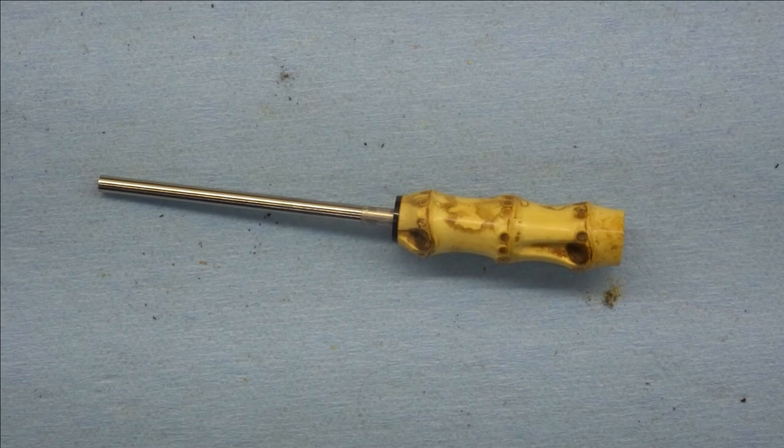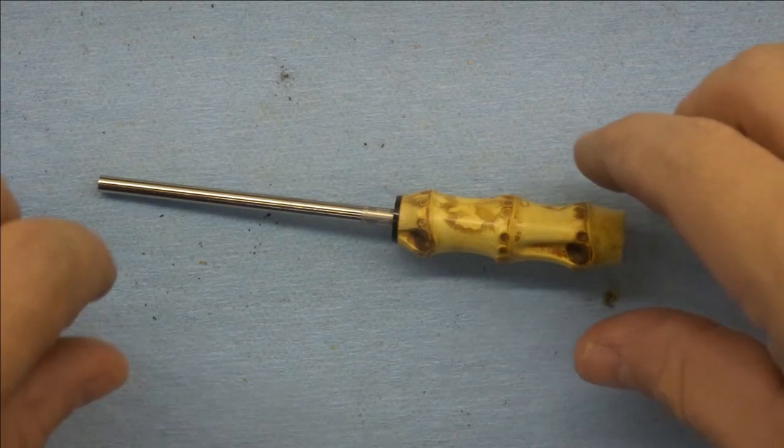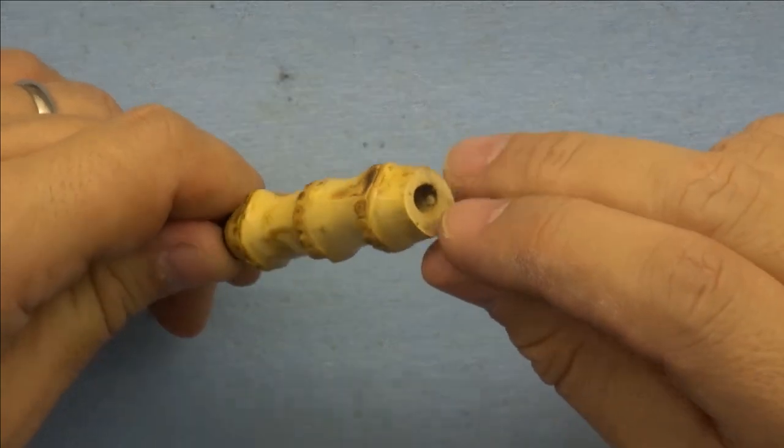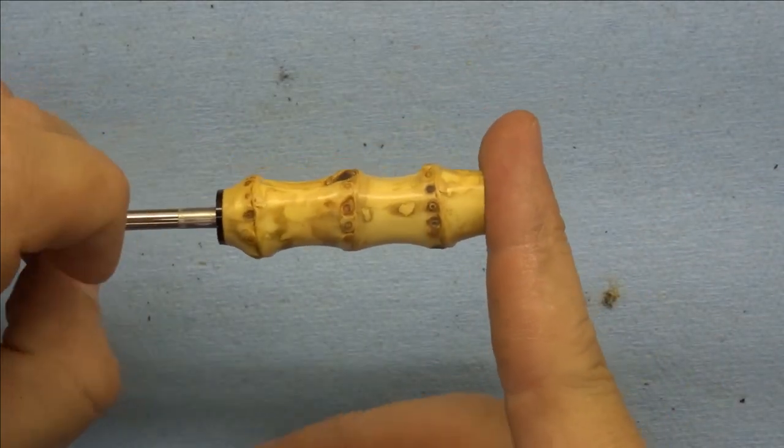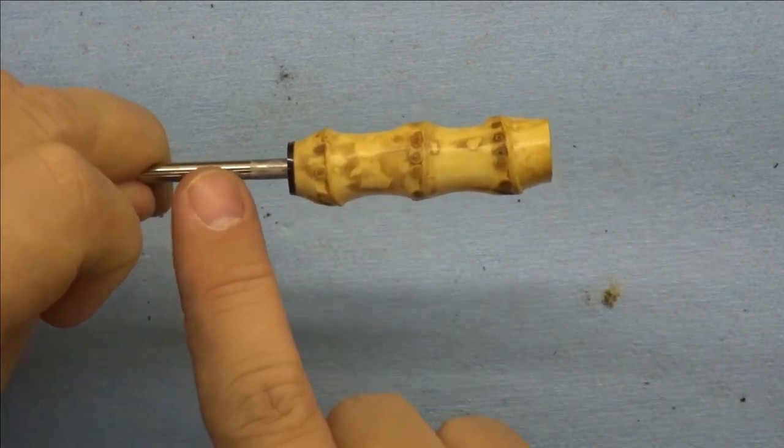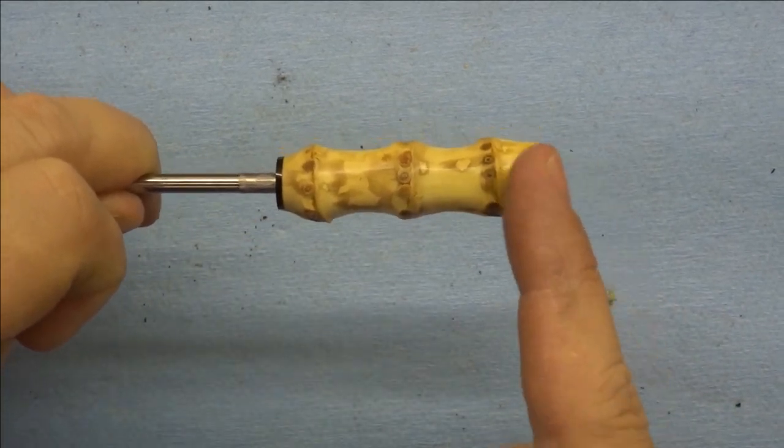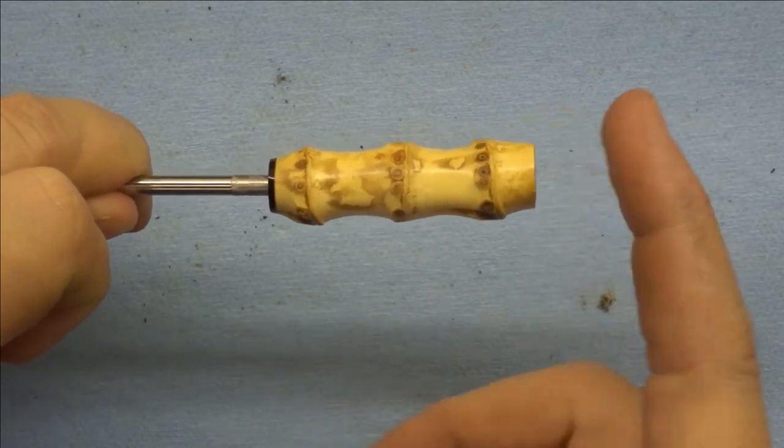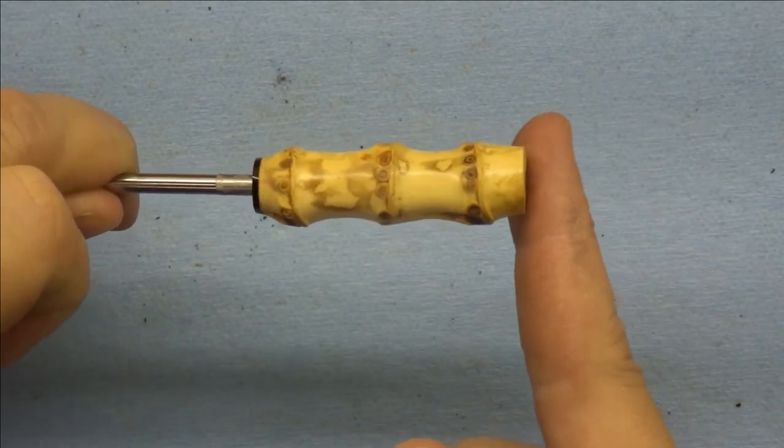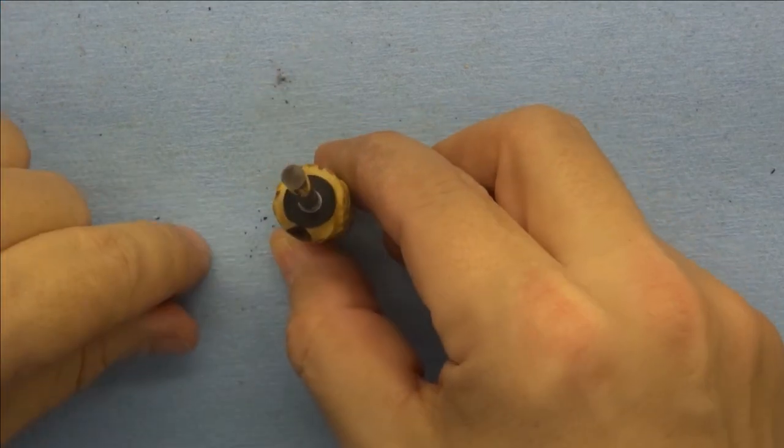All right well after some frankly nerve-wracking lathe work we are in business. So what I've done is I've faced off the end of this so that it is actually 90 degrees to this axis. So it may not look straight relative to the nodes and all that but that doesn't matter, we want to make sure that it's straight relative to the airway and it is.